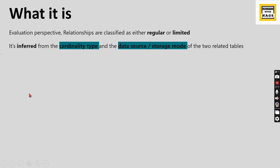In the evaluation perspective, relationships are classified as either regular or limited. As a modeler, designer, or Power BI developer, you are not deciding whether a relationship should be regular or limited. Based on the cardinality type, different data sources, and storage mode, regular and limited are inferred — Power BI itself creates these classifications internally.